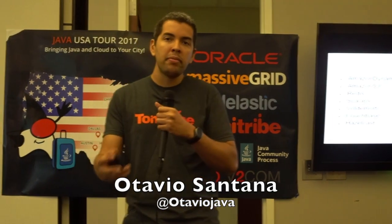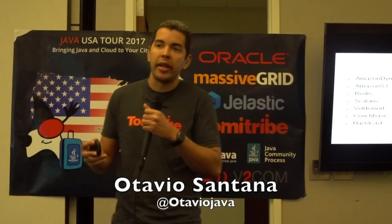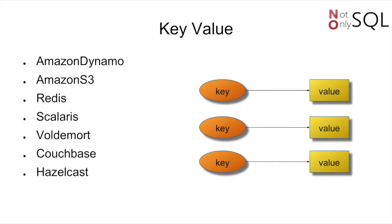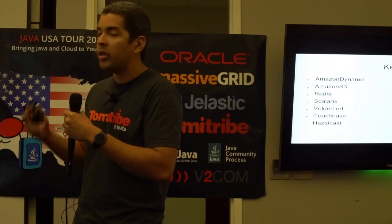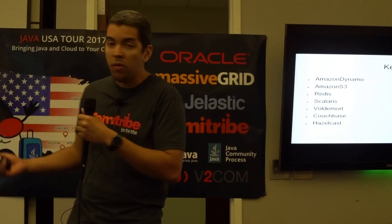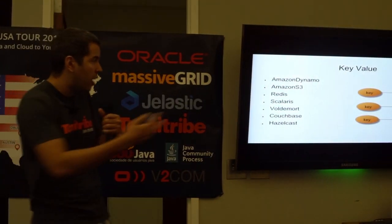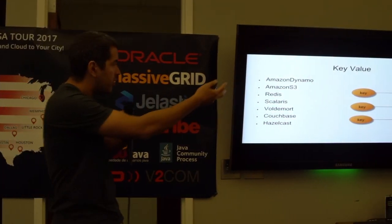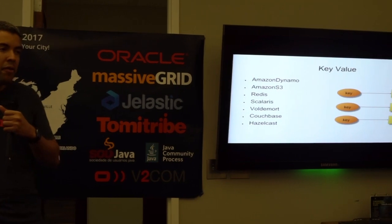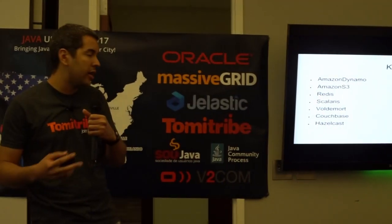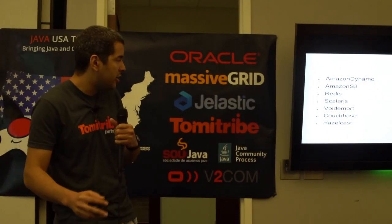Let's go deeply into the types. The first one is key-value. The most famous one is Redis. I believe everyone here is a Java developer. The key-value has a structure like a hash map — I have a key, and for that key I have a respective value. I can retrieve information by the key, and that is it.